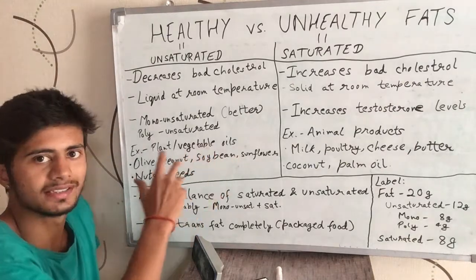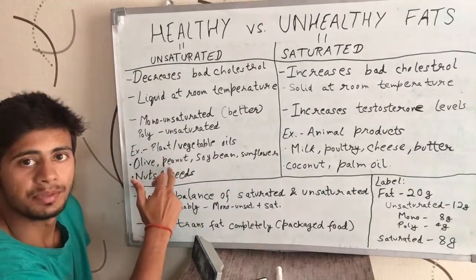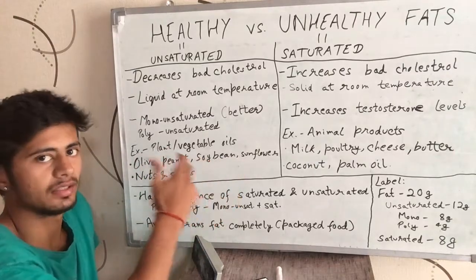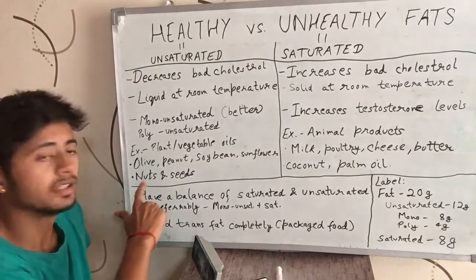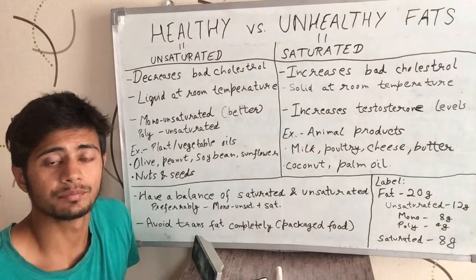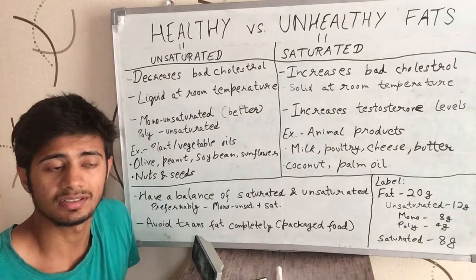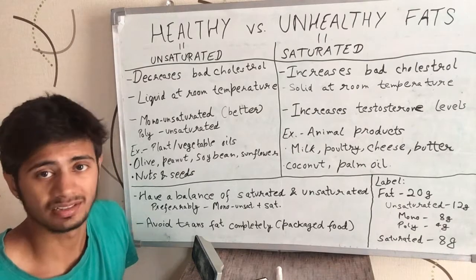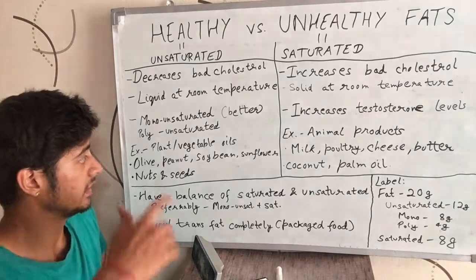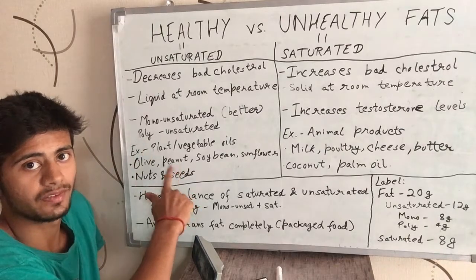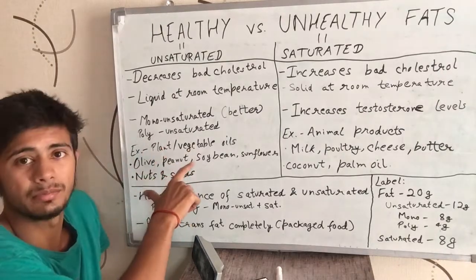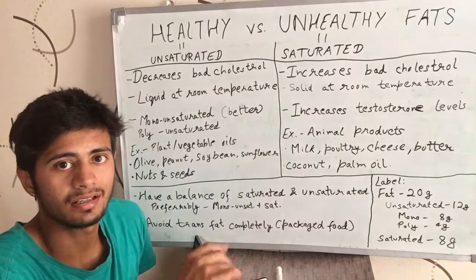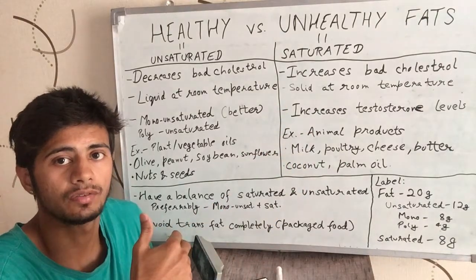Examples of unsaturated fats mostly come from plant-based things, such as vegetable oils like olive oil, peanut oil, soybean oil, and sunflower oil. Nuts and seeds — such as almonds, cashew nuts, walnuts, and sesame seeds — also provide unsaturated, healthy fats. So unsaturated fats are mostly plant-based.